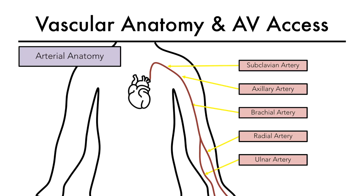The ulnar artery is seldom used for access as it runs deep. The radial artery runs laterally in the forearm very close to the cephalic vein and makes a perfect setup for creation of the radiocephalic AV fistula at various points in the forearm.